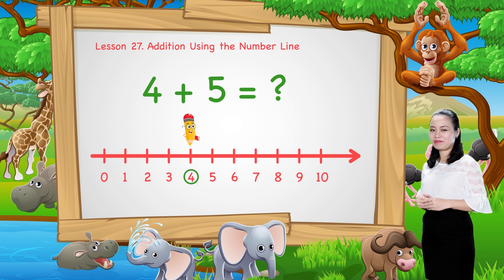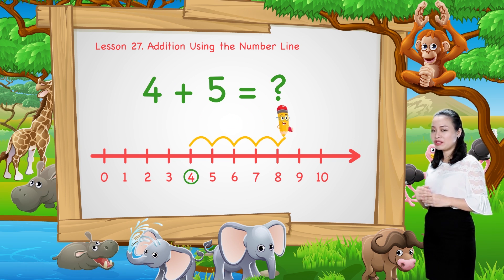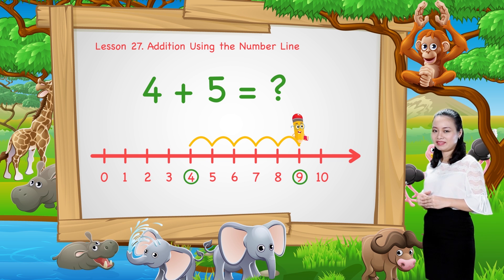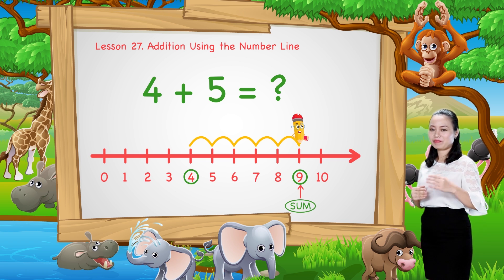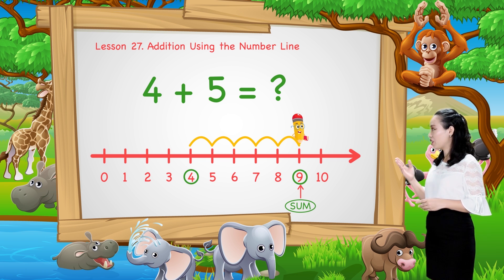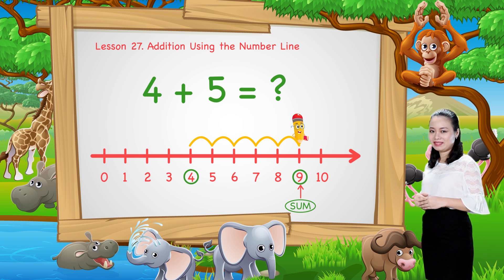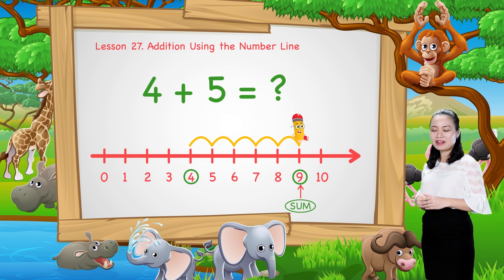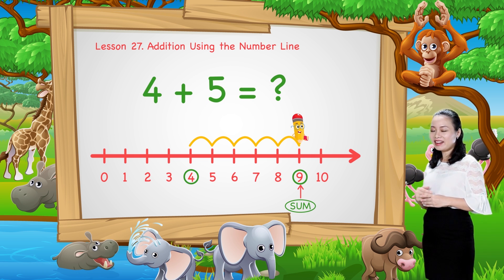We start from number 4. Then, jump five numbers to the right. Then, see the number where we stop. This number is the sum. Here, we land at number 9. Therefore, 4 plus 5 equals 9.